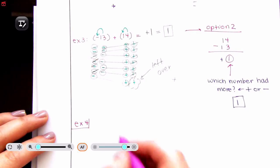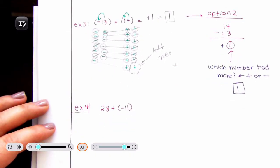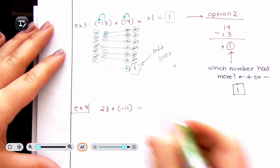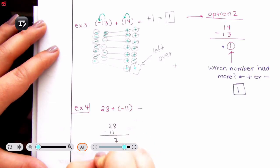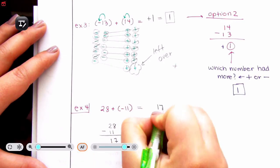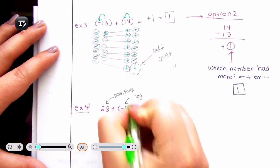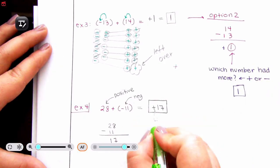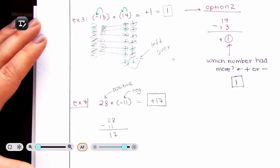Example 4: 28 plus negative 11. Let's use option 2 since the numbers are larger. Take the bigger number and subtract the smaller: 28 minus 11. Eight take away one is seven, two take away one is one — that gives us 17. Which one has more — do I have more negatives or more positives? I have 28 positives but only 11 negatives, so definitely positive. The answer is positive 17.